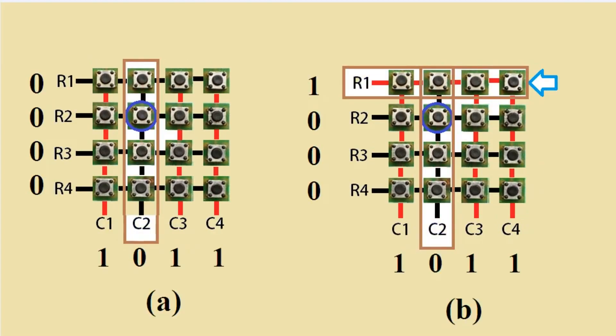Now, the software has to scan the pins connected to the columns. If it detects a logic 0 in any or one of the columns, then a key press was made in that column. This is because the event of the switch press short-circuits the C2 line with R2. Hence, C2 is driven low.